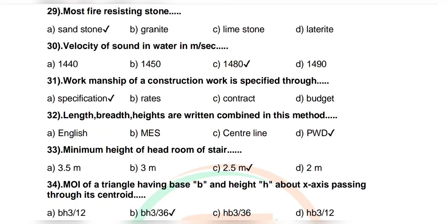Question 29: Most easily cleft stone — options: sandstone, granite, limestone, laterite. Correct answer: sandstone. Question 30: Velocity of sound in water in m/s — options: 1440, 1450, 1480, 1490. Correct answer: 1480.